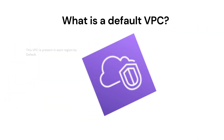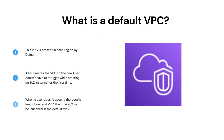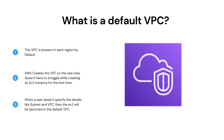Next question is: what is a default VPC? A default VPC is a logically isolated virtual network in the AWS cloud that is automatically created for your AWS account the first time you provision Amazon EC2 resources. When you launch an instance without specifying a subnet ID, your instance will be launched in your default VPC.